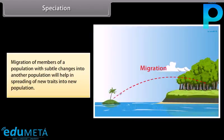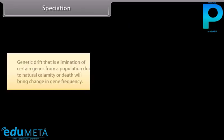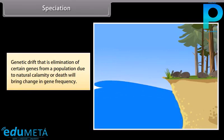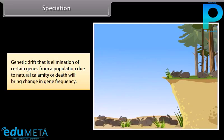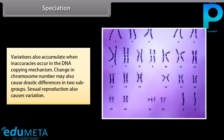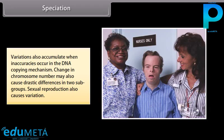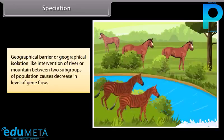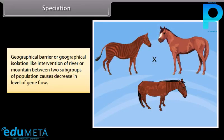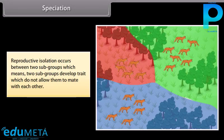Migration of members of a population with subtle changes into another population will help in spreading of new traits into a new population. Genetic drift — that is, elimination of certain genes from a population due to natural calamity or death — will bring change in gene frequency. Variations also accumulate when inaccuracies occur in the DNA copying mechanism. Change in chromosome number may also cause drastic differences in two subgroups. Sexual reproduction also causes variation. Geographical isolation like the intervention of a river or mountain between two subgroups causes a decrease in the level of gene flow. Reproductive isolation occurs between two subgroups, which means they develop traits that do not allow them to mate with each other.